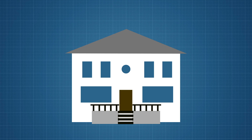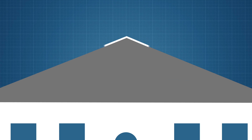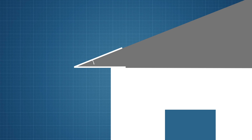The obtuse angle is up there on the top of the roof. It is greater than 90 degrees but smaller than 180 degrees. On the bottom of the roof, there is the acute angle. It is smaller than 90 degrees.